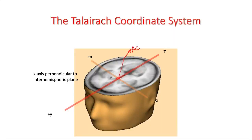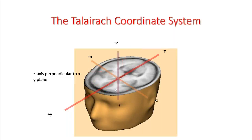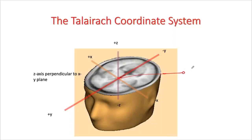The anterior commissure is the origin of this coordinate system. A line through that point perpendicular to the y-axis is the x-axis — going right on one side and left on the other. Each point in the brain has an x and y coordinate. Adding a perpendicular z-axis completes the system, and the anterior commissure itself is coordinate zero, zero, zero.